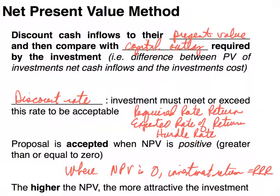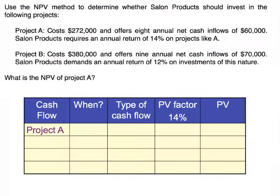We're going to see where that may not always be true in just a few minutes. Let's look at an example. We're going to use the net present value method to determine whether salon products should invest in the following projects. We're going to look at Project A together. Project A costs $272,000 and offers eight annual net cash inflows of $60,000. Salon products requires an annual return of 14% on projects like A.